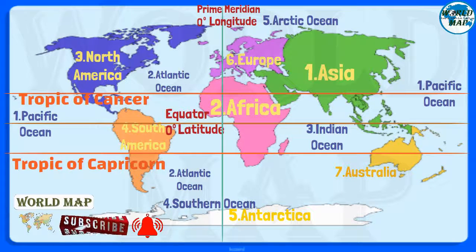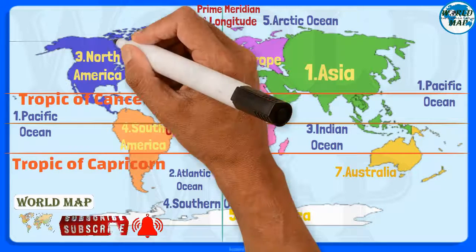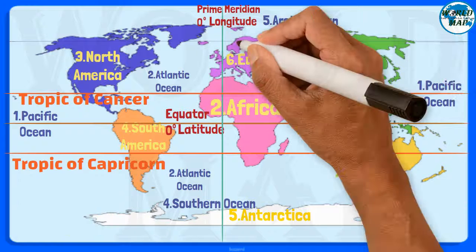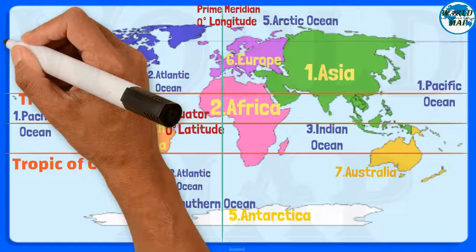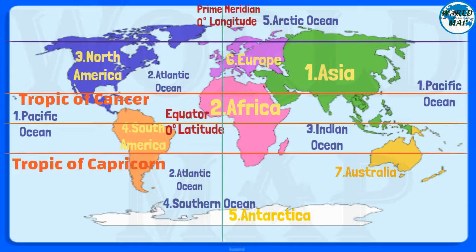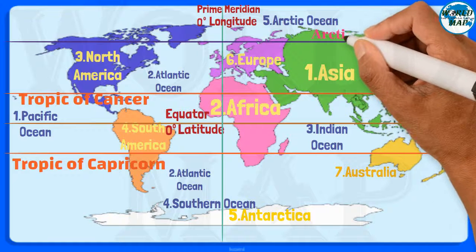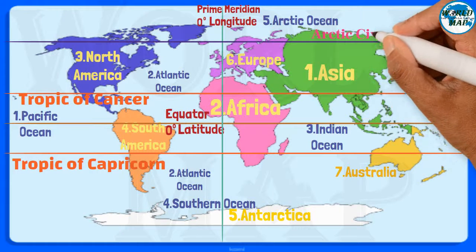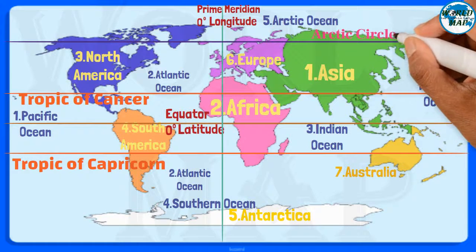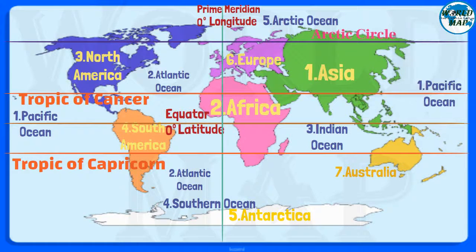Arctic Circle. The Arctic Circle is an imaginary line that encircles the Earth at a latitude of 66 degrees 33 minutes north. It is one of the two polar circles and one of the five major circles of latitude.